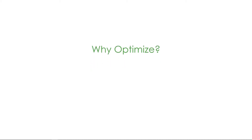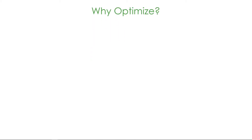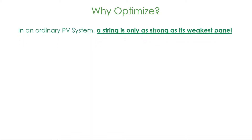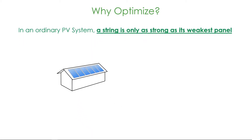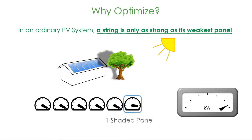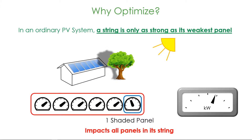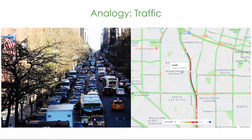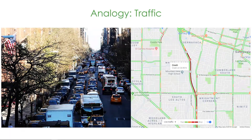In an ordinary PV system, a string is only as strong as its weakest panel. If the sun is out and shining evenly on all panels, everything is fine. But if even one panel becomes shaded, it impacts all other panels in its string, dragging down performance. This is analogous to the way an accident causes traffic — an accident anywhere on a road slows down every car before it.